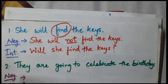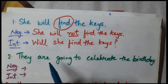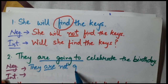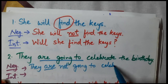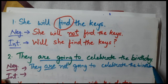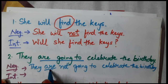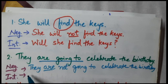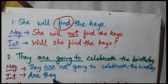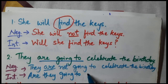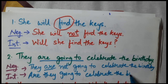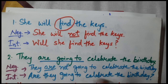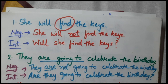Next example: 'They are going to celebrate the birthday.' Here the helping verb is are. For negative, we simply add not: 'They are not going to celebrate the birthday.' We do not change the verb or the object — just add not after the helping verb. For interrogative, take the helping verb and put it before the subject: 'Are they going to celebrate the birthday?' If you want a negative interrogative: 'Are they not going to celebrate the birthday?'